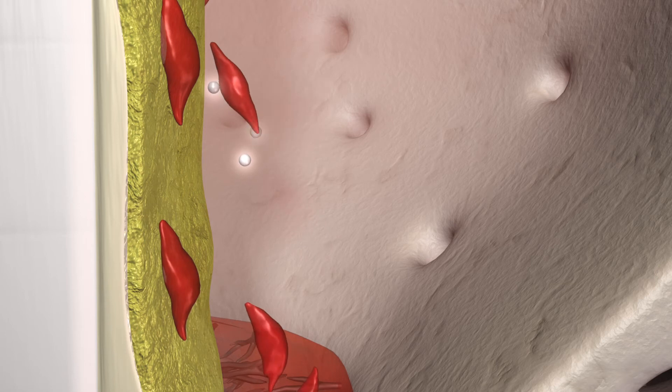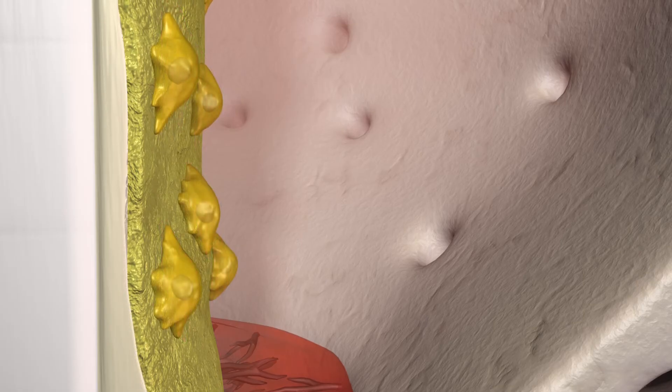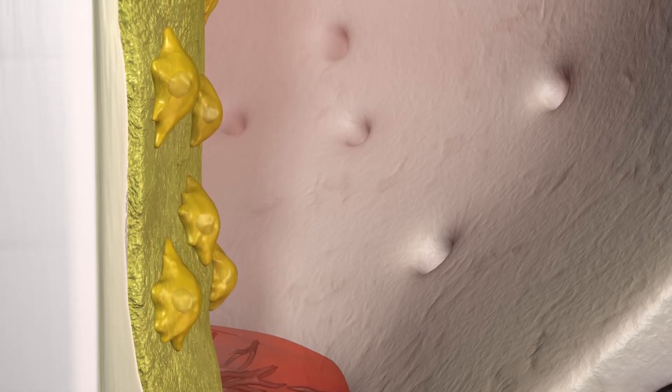Under these optimal conditions, supporting cells settle on the root surface. There, the supporting cells become differentiated to cementoblasts and begin formation of the cement matrix in which the periodontal ligament fibers will be fixed.